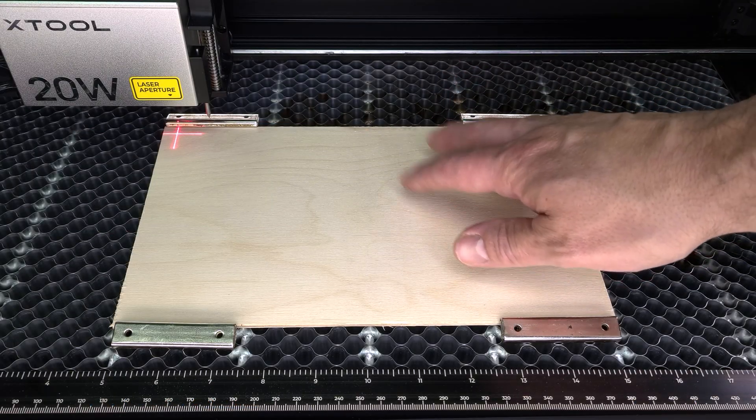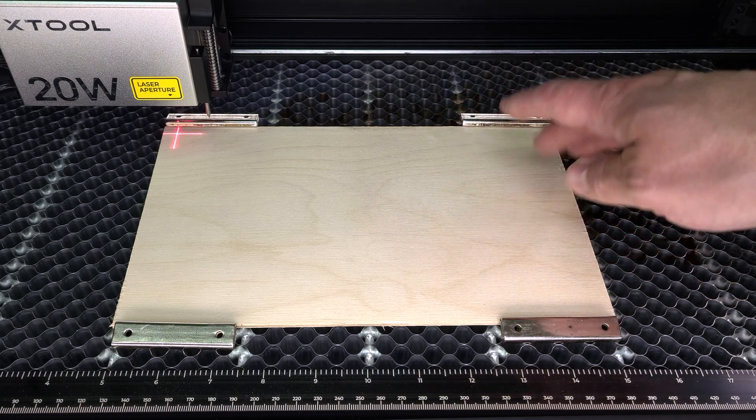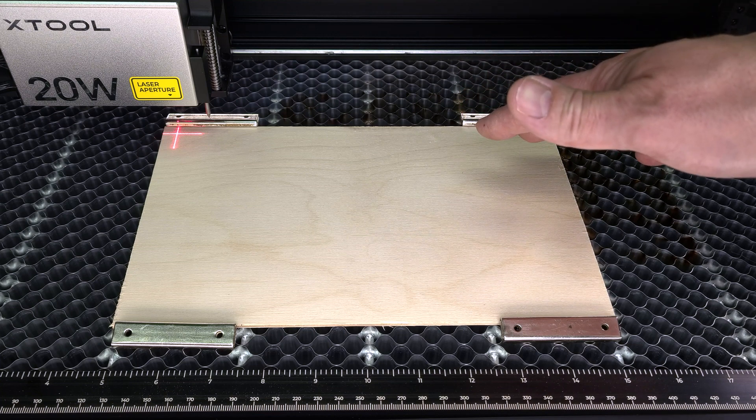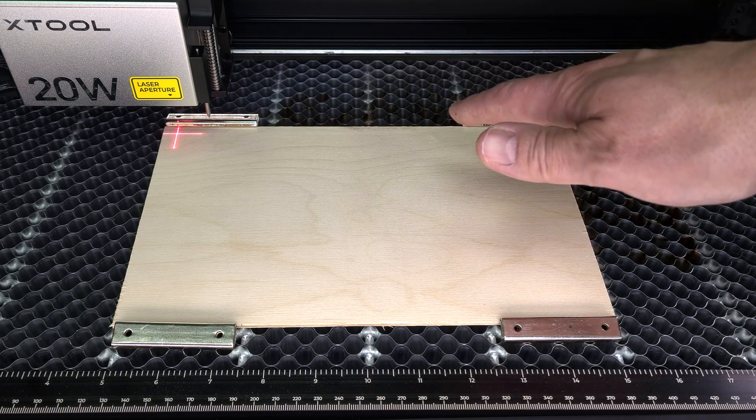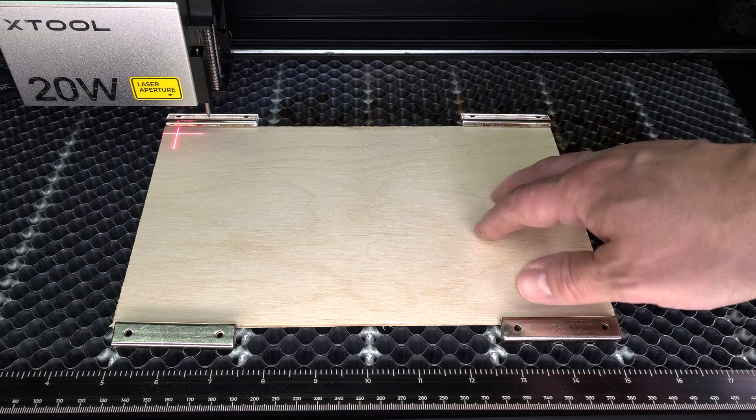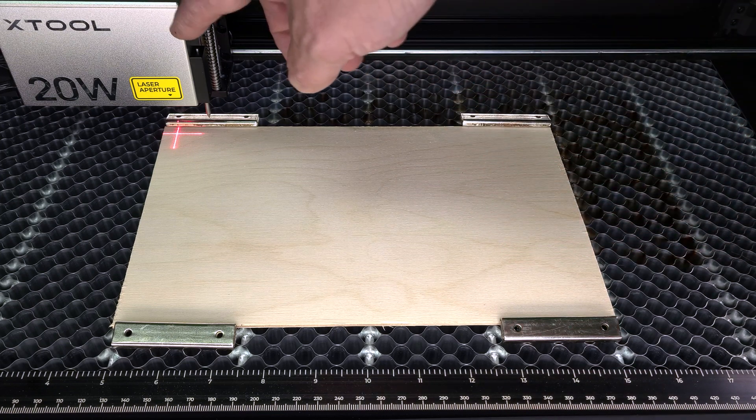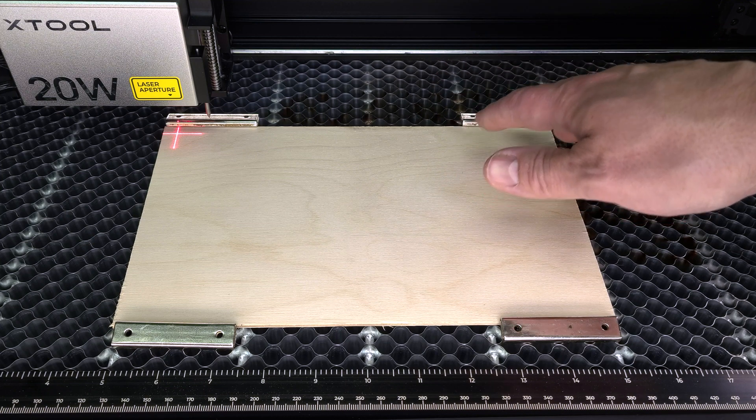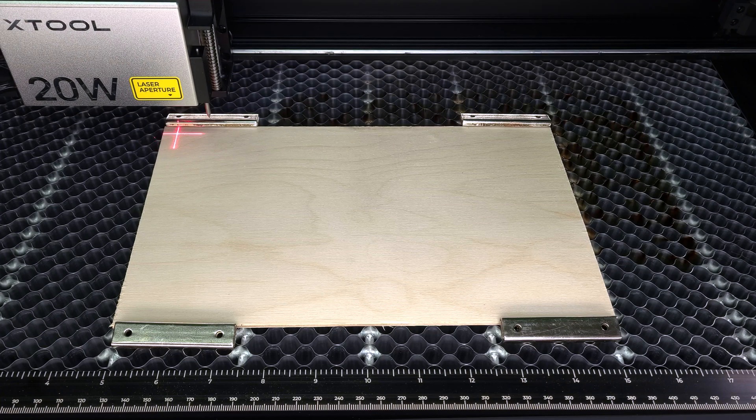For the test cut of this handle, I'll be using a scrap piece of one-eighth Baltic birch plywood. The reason I'm using this plywood right now is because it's a lot more affordable to use for prototyping than hardwood boards. I've attached the plywood to the honeycomb bed of the Xtool using some bar magnets. I'm now going to do a frame trace just to make sure my cut fits within the work material. That looks good so let's go ahead and cut this.